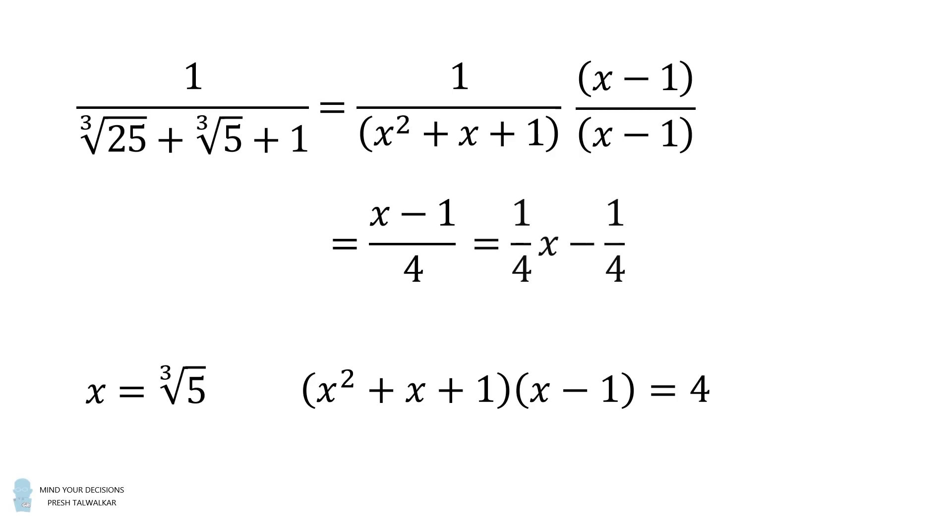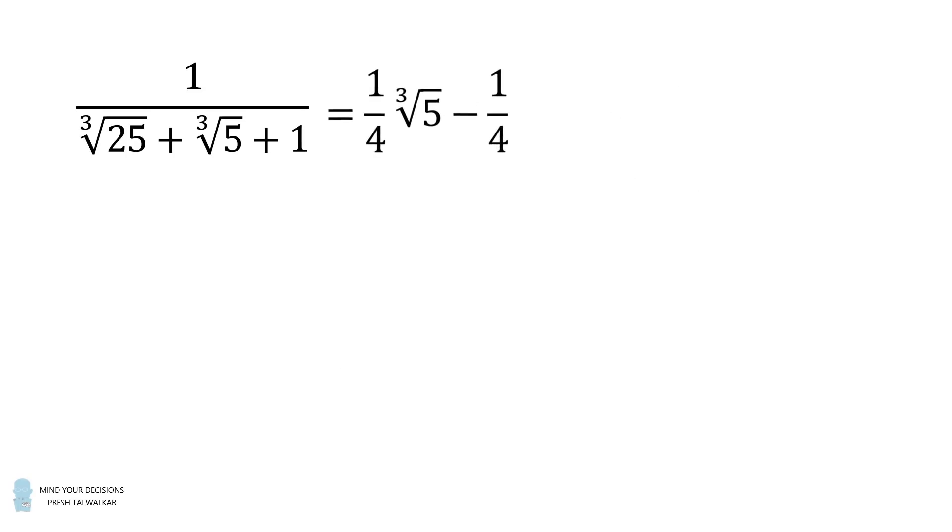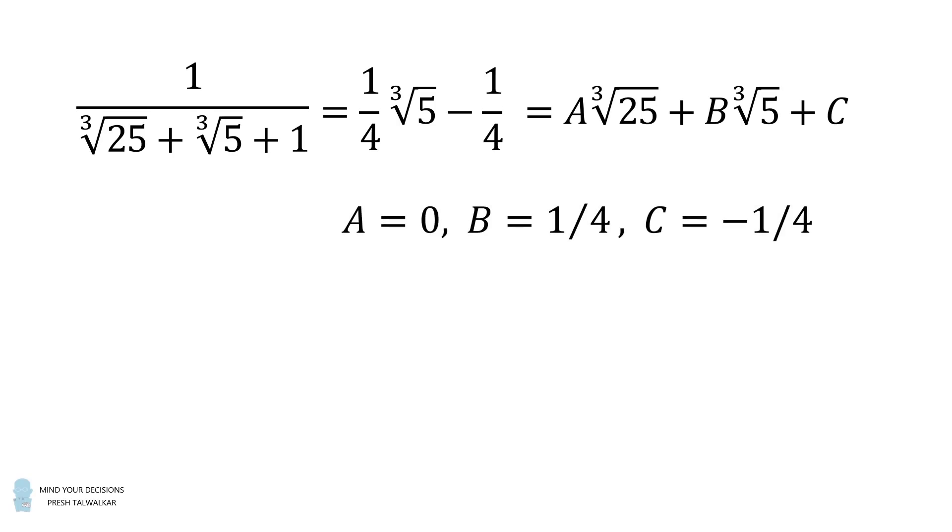We divide through by 4 to get 1 4th x minus 1 over 4. Then x is equal to the cube root of 5, so we get 1 over 4 multiplied by the cube root of 5 minus 1 over 4. We now equate this to the original equation a multiplied by the cube root of 25 plus b multiplied by the cube root of 5 plus c. We can then equate coefficients to get that a is equal to 0, b is equal to 1 over 4, and c is equal to negative 1 over 4. Thus, a plus b plus c is equal to 0. And that's the answer.